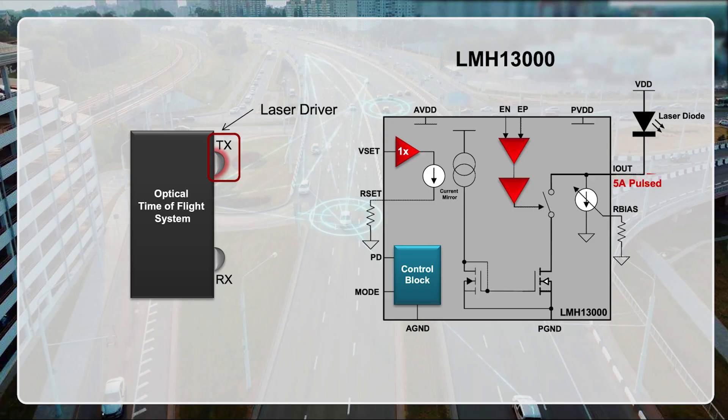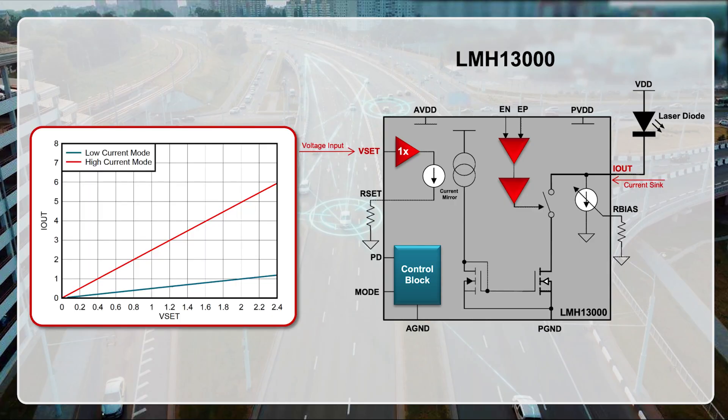The LMH13000 supports up to 5 amps in pulsed operation and supports a continuous current of up to 2 amps. A very accurate current sink level can be set by simply placing a voltage on the V-set pin. If a system requires higher current levels, multiple LMH13000 devices can be used in parallel.